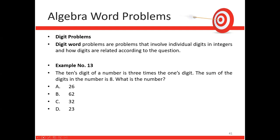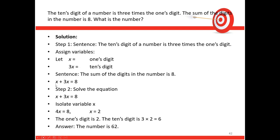Digit Problems: Example 13 — The tens digit of a number is 3 times the ones digit, and the sum of the digits is 8. Let x = ones digit, 3x = tens digit. Then x + 3x = 8 → x = 2. Ones digit = 2, tens digit = 6. The number is 62.